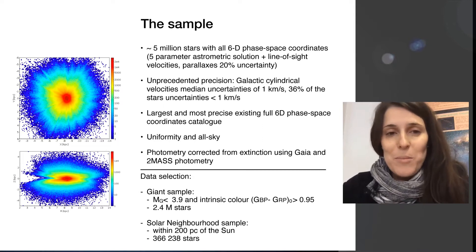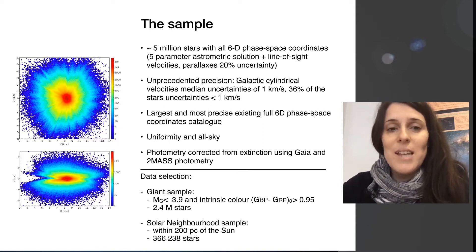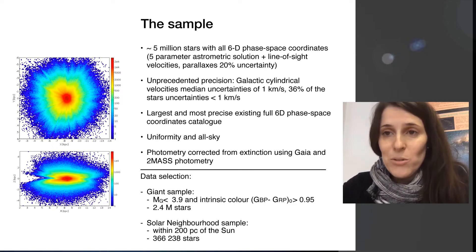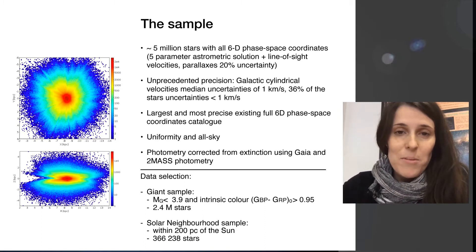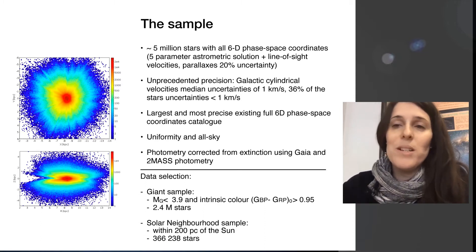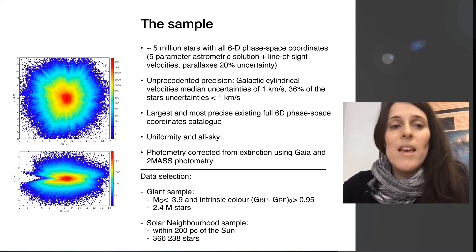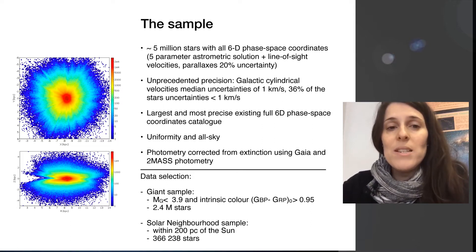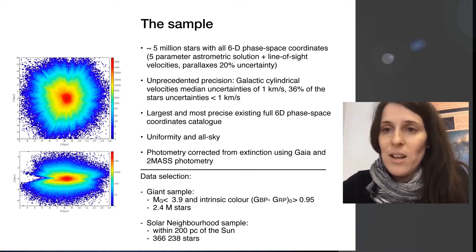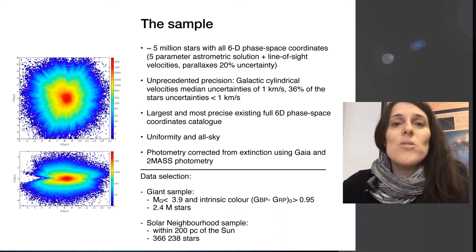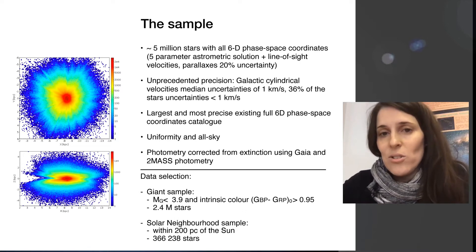Apart from these advantages, we have to take into account that this is a sample where the data has been taken in a very uniform way. All the radial velocities come from the same instrument, all the astrometric parameters come from the same instrument, and they all come from a single satellite. Comparing to previous surveys, we now have a sample that covers the full sky, whereas before, previous surveys focused only on certain directions in the galaxy.